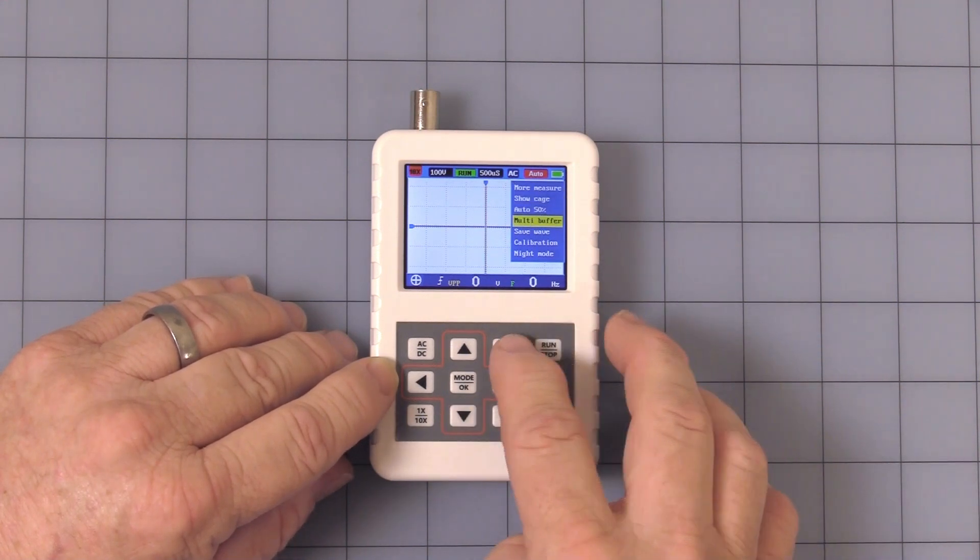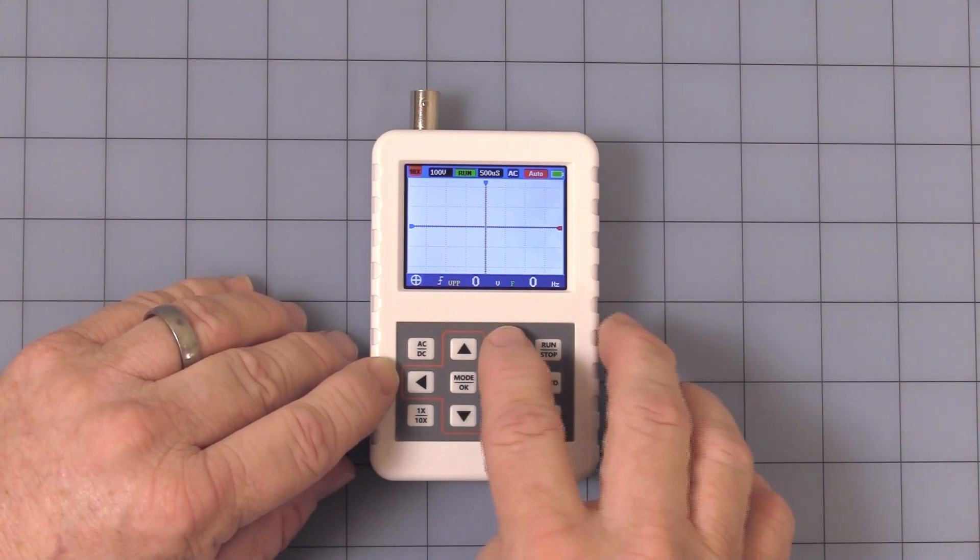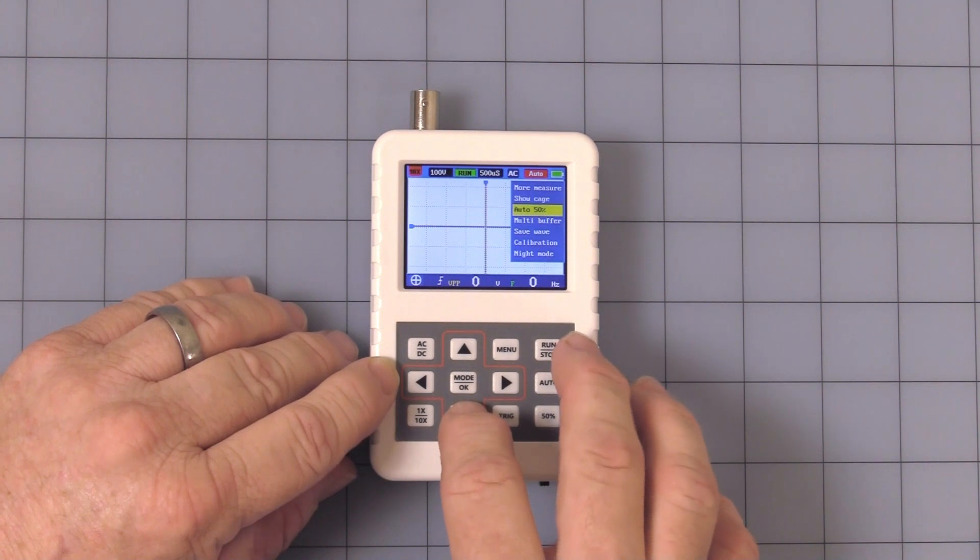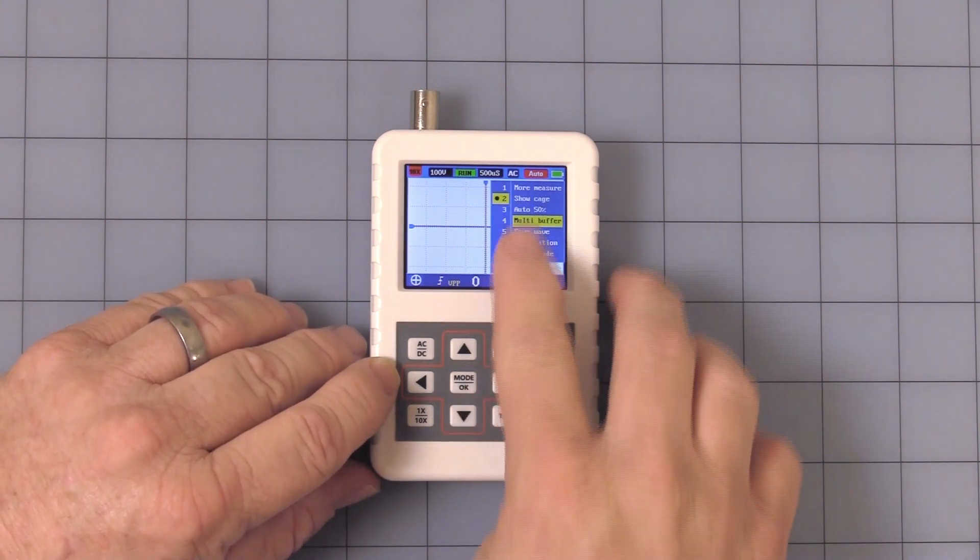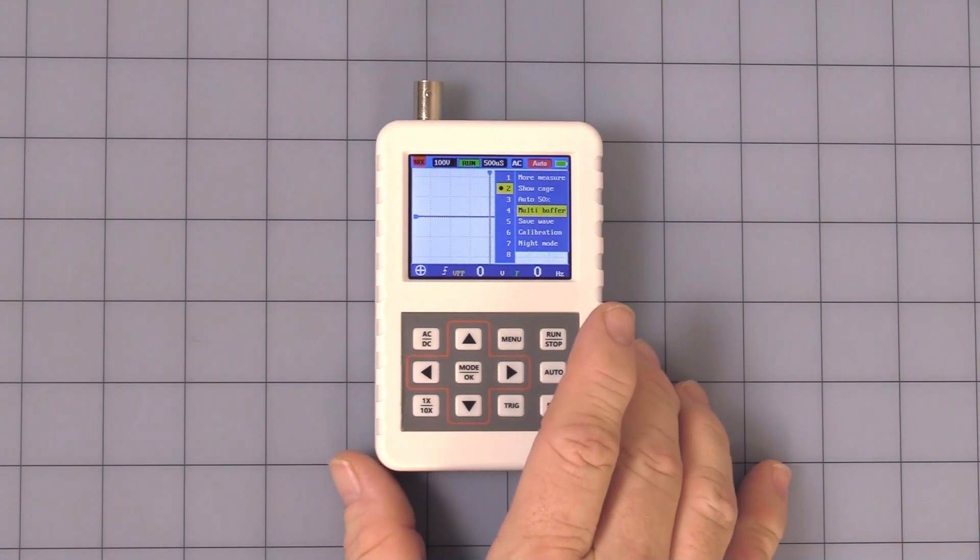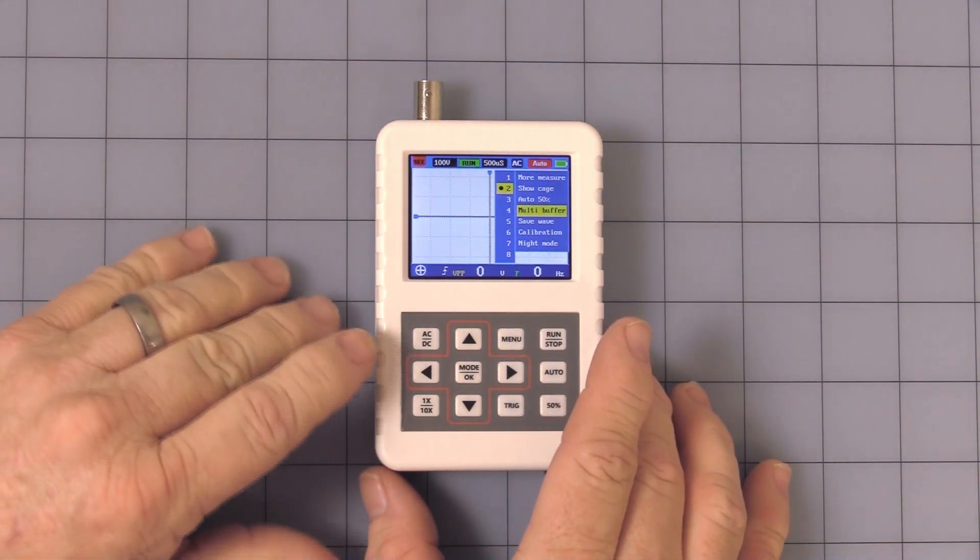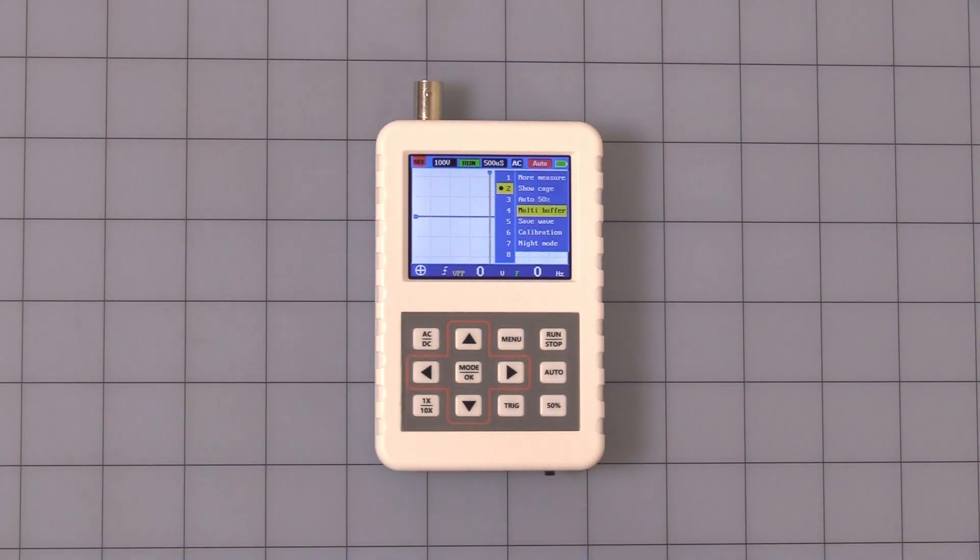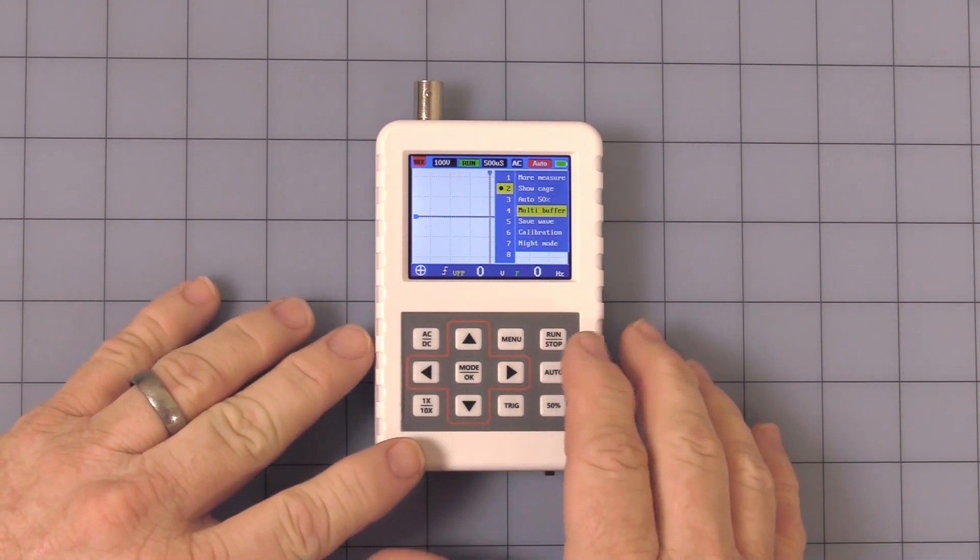Then you have multi-buffer. As I understand it, helps you. You can increase or decrease the resolution depending on your waveform, whether you need high or slow, fast or slow.